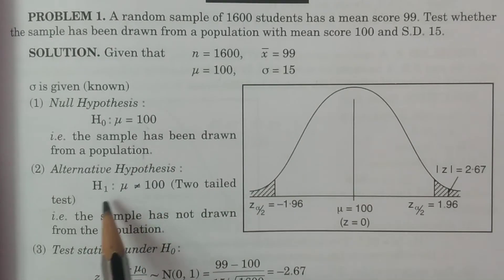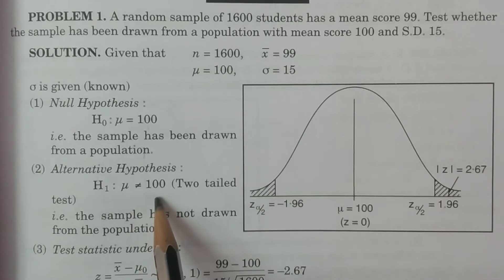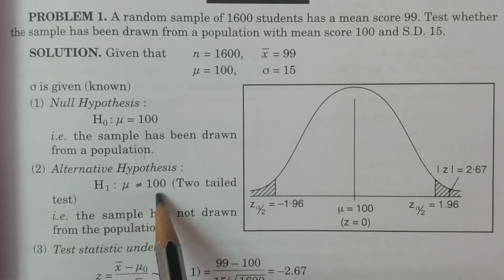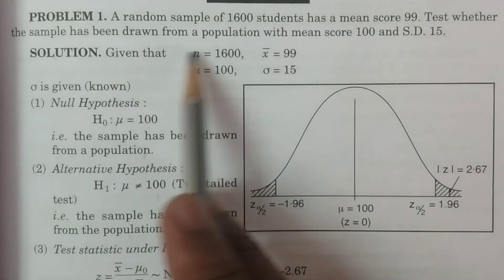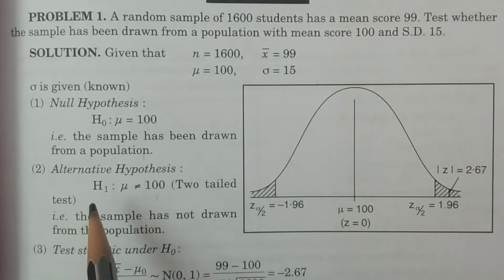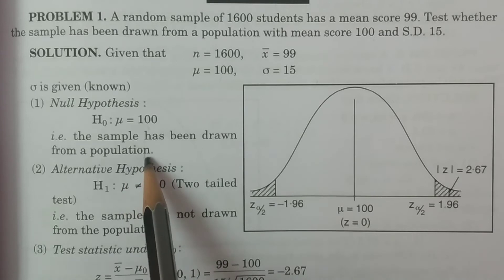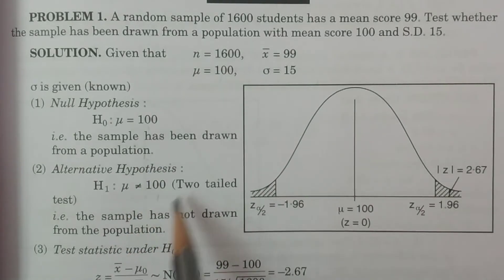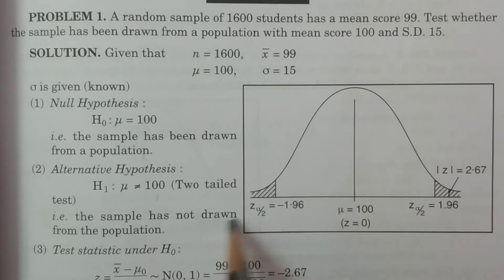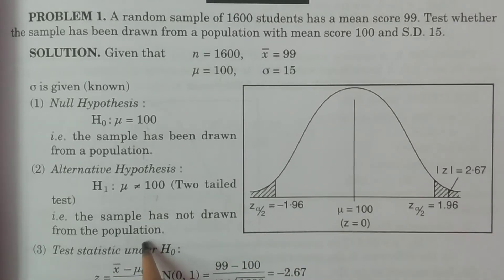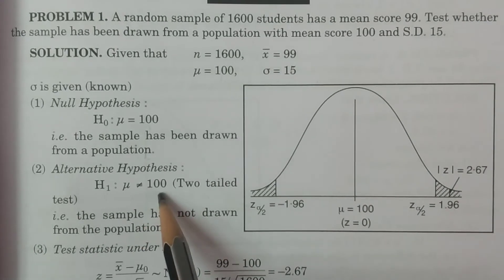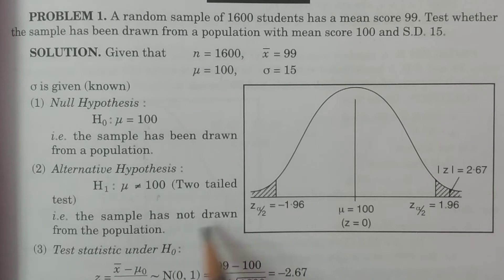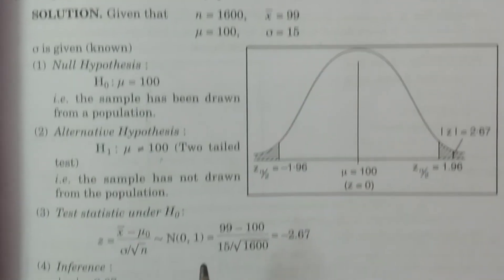The alternative hypothesis is H1: mu is not equal to 100, because there is no evidence to consider greater than or less than. Hence it is not equal to 100 — a two-tailed test. In H1, the sample has not been drawn from the population.